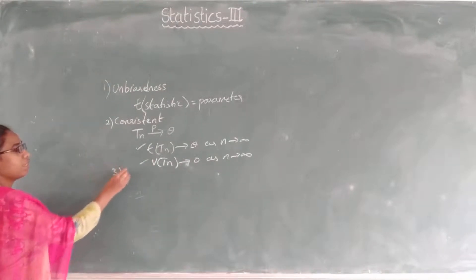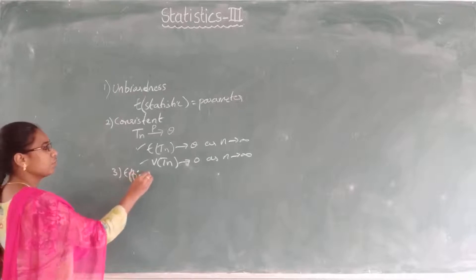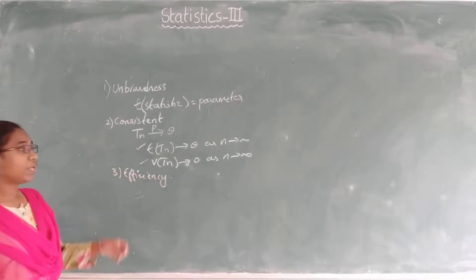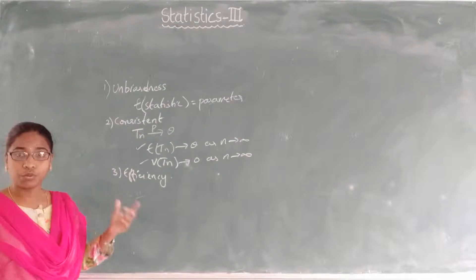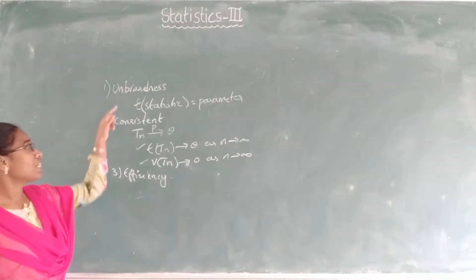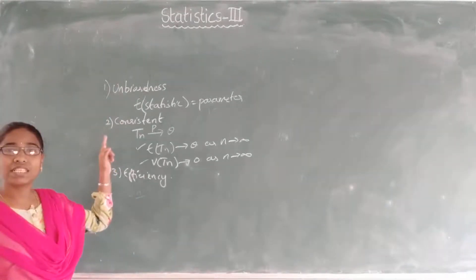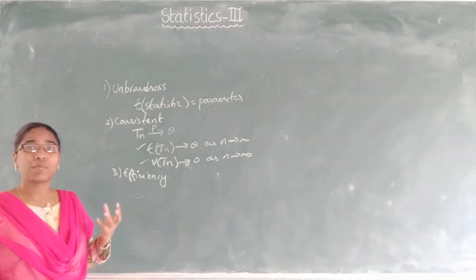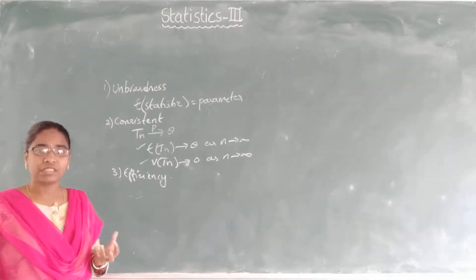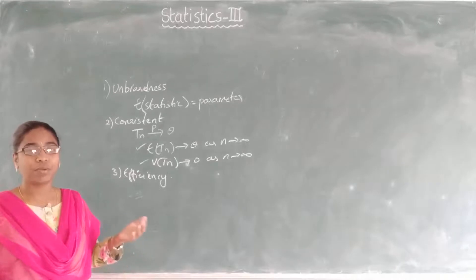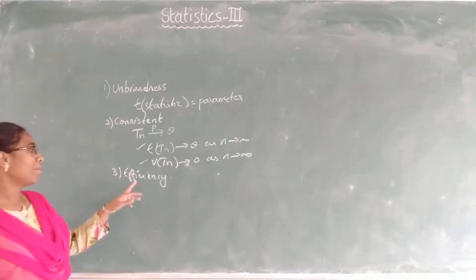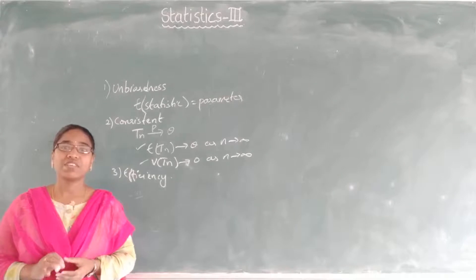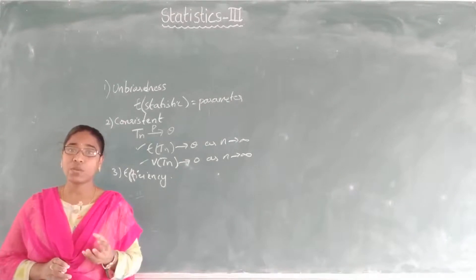The third characteristic is efficiency. Whenever you have more than two estimators that satisfy both unbiasedness and consistency, we choose the best one among them. Efficient means better than the others. To compare them, we use efficiency — whichever estimator has the lesser variance is considered the efficient estimator.